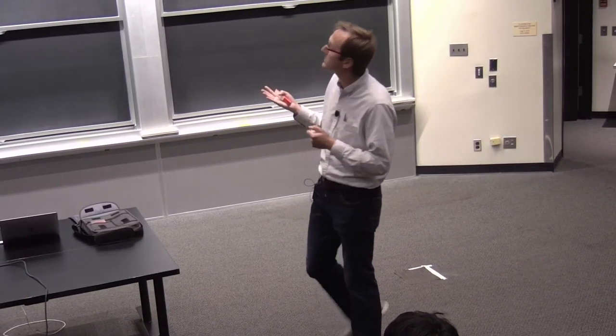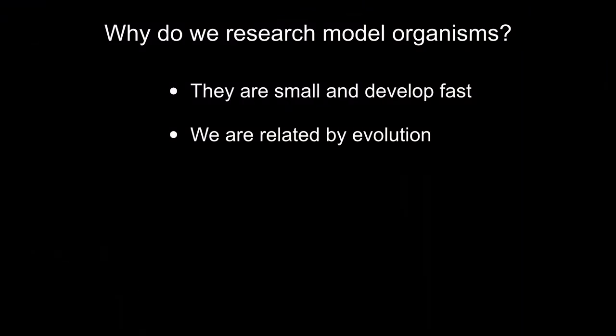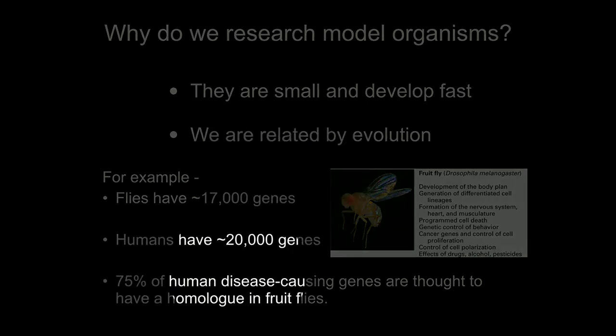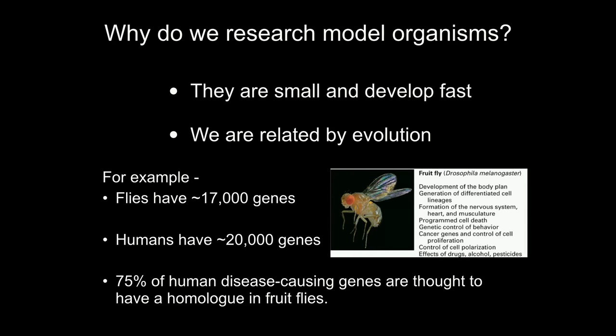But maybe most importantly is the fact that we are related to each of these model organisms through evolution, because we all arose from a common ancestor. To highlight this using the fruit fly: the fruit fly has 17,000 genes compared to our 20,000 genes — roughly the same order of magnitude. And if we consider just human disease-causing genes, 75% of the human disease-causing genes have a homologous gene in the fruit fly. So we're similar to model organisms in precisely the genes that are important for understanding human disease.